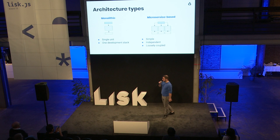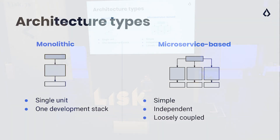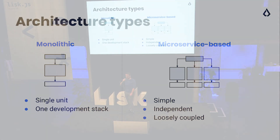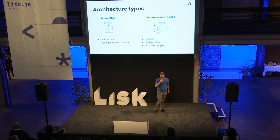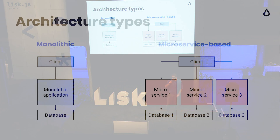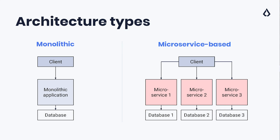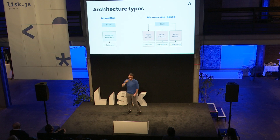For those who never heard about microservices: in contrary to the monolithic architecture of software that we write — monolithic architecture is a single-unit, one-development stack architecture — microservice-based architecture consists of several applications that are simple, independent, and loosely coupled. That's very important about microservices because, as we can see on the slide, each microservice connects to a separate database, so they are quite independent programs. They can run on the same server infrastructure, but they can also be distributed among the whole infrastructure.